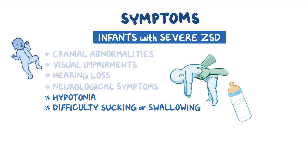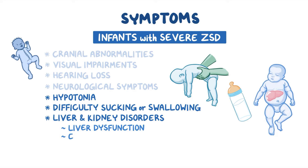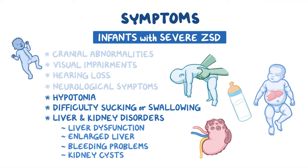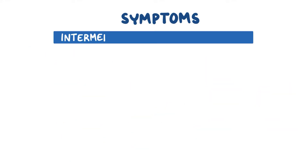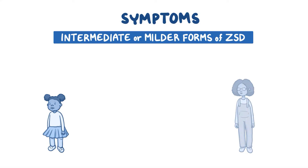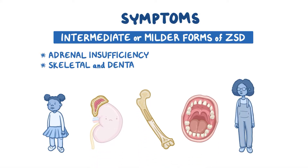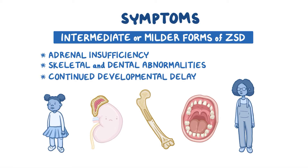Infants with ZSD may also develop liver and kidney-related disorders, causing liver dysfunction, enlarged liver, bleeding problems, and kidney cysts. Individuals with intermediate or milder forms of ZSD often have a slower disease progression and may exhibit milder symptoms. Some symptoms that may become noticeable in childhood include adrenal insufficiency, skeletal and dental abnormalities, and continued developmental delay as individuals approach school age.